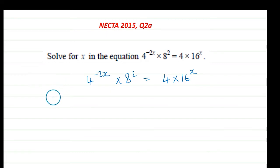Hi, welcome to this tutorial. In this session we are going to solve for x in the equation 4^(-2x) × 8^2 = 4 × 16^x.